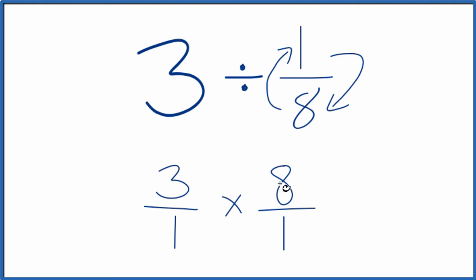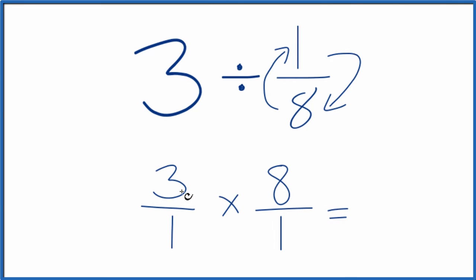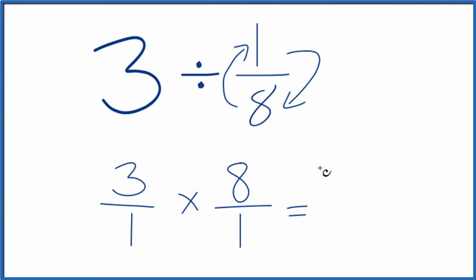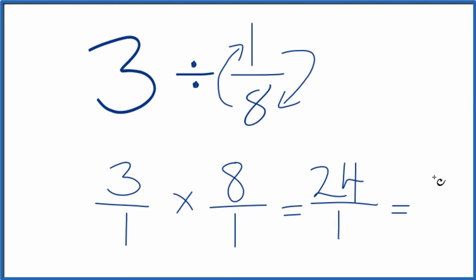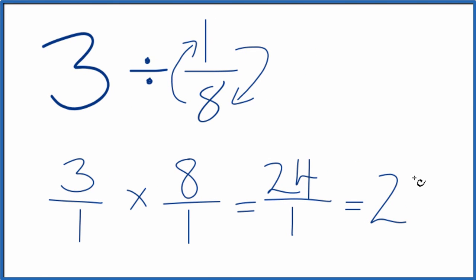Now that we have fractions, we can just multiply. When multiplying fractions, we multiply the numerators and the denominators, and that gives us our answer. 3 times 8 is 24, and 1 times 1 is 1. And 24 divided by 1 is just 24. So 3 divided by 1/8 equals 24.